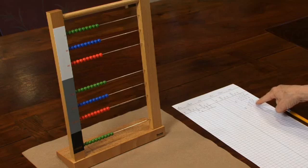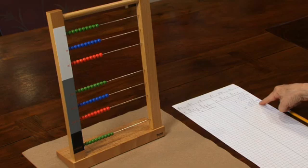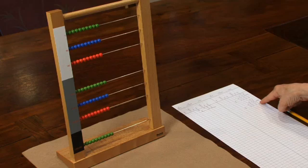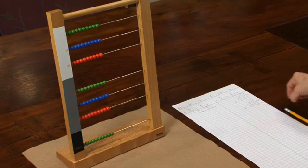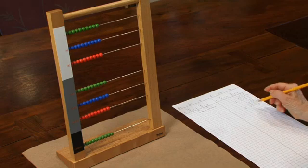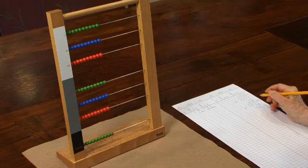Before I begin the multiplication, I want to look at this part of the problem. And when I take 7 thirty times, that's going to be a lot of work. It would be a lot easier if I just took 70 three times. So I'm going to move the units place over.